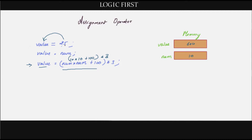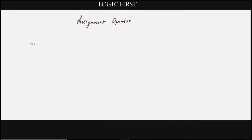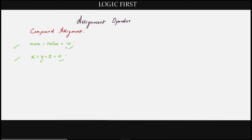It's now clear why we always have a variable on the left hand side — it's meaningless to have anything else there. In general, the syntax is: variable = expression. The expression can be as simple as a constant or any valid mathematical expression. You can also write something like num = value = 10, assigning 10 to both variables. You can chain any number of variables, like x = y = z = 0. This is called compound assignment.